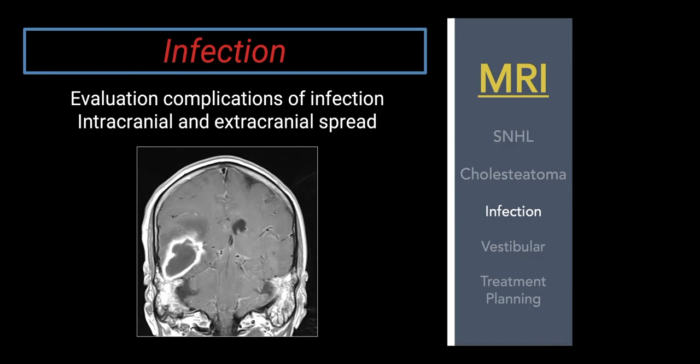For infection on MRI: we already covered coalescent mastoiditis on CT. If there's no coalescence, how do you know something's infected? On imaging, I look for signs of infection outside the temporal bone. Here's a case with a giant temporal lobe abscess extending up from a completely opacified mastoid. Just looking at the mastoid alone, I couldn't say it's infected, but with an abscess sitting on top of it, that confirms the diagnosis.